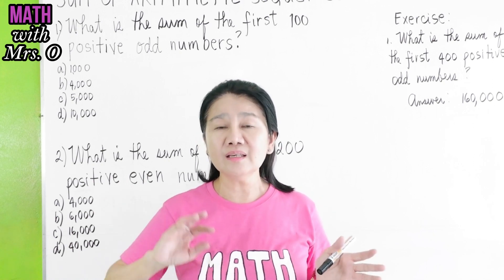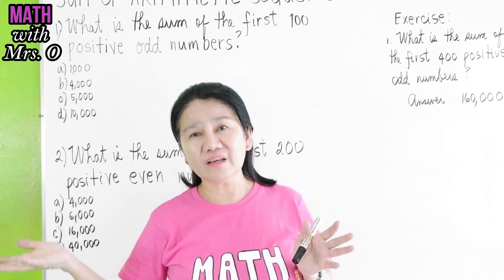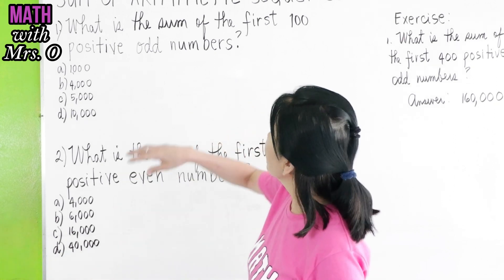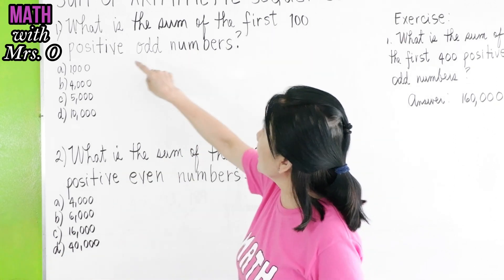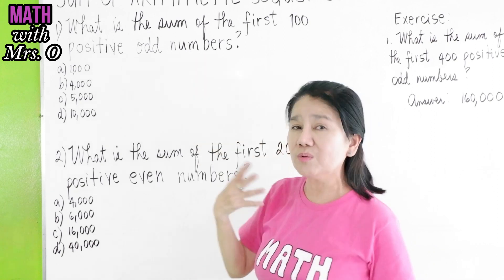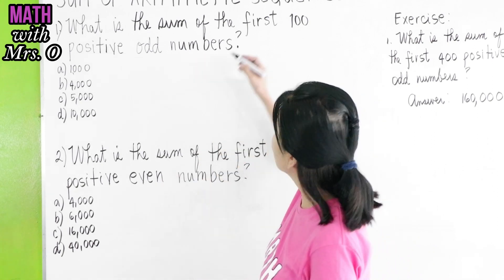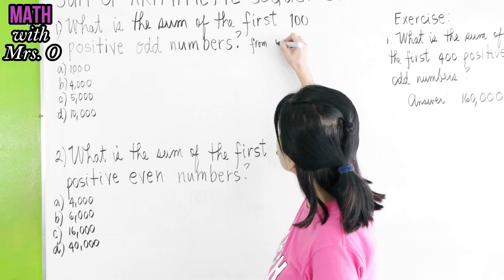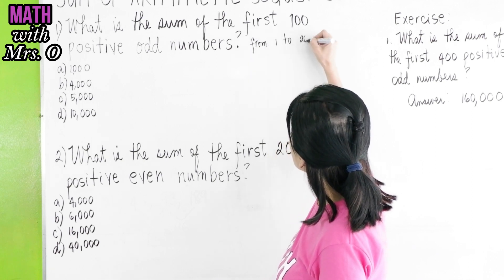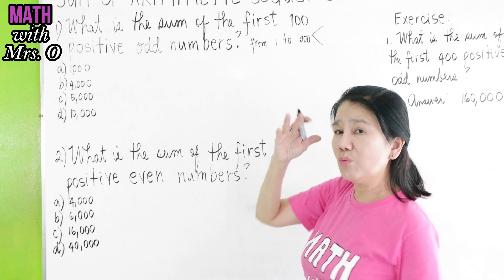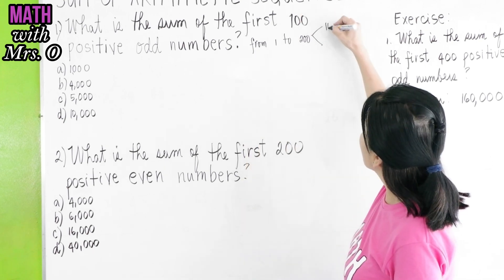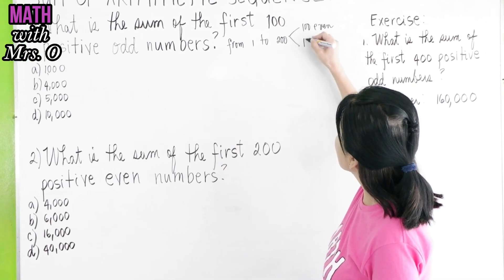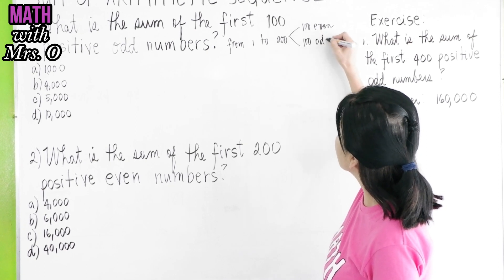From 1 to 20, how many are odd? 10. How many are even? 10. So if we have the first 100 positive odd numbers, we will be considering numbers from 1 to 200. If we have 1 to 200, 100 are even numbers and 100 are odd numbers.